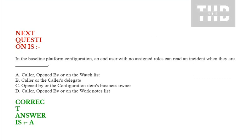Next question: In the baseline platform configuration, an end user with no assigned roles can read an incident when they are: Option A: Caller, opened by, or on the watch list. Option B: Caller or the caller's delegate. Option C: Opened by or the configuration item's business owner. Option D: Caller, opened by, or on the work notes list. Correct answer is Option A.